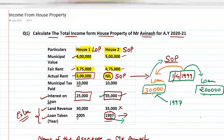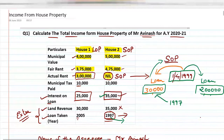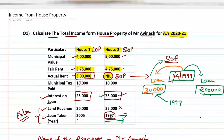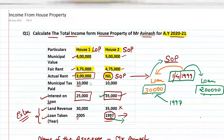Now we will solve question number one. We have to calculate the total income from house property of Mr. Abhinash for assessment year 2020–2021. In this question there is house number one and house number two. First we check which is LOP and which is SOP. In the question, actual rent is given — for house number one actual rent is ₹3 lakhs and for house number two it is also given.